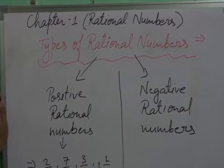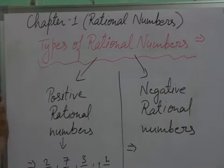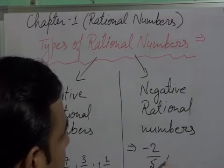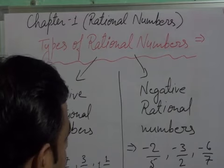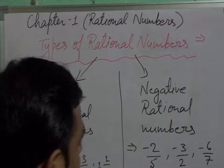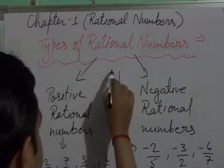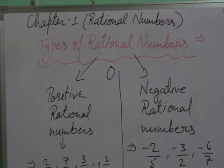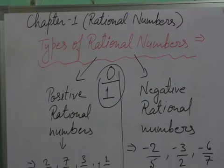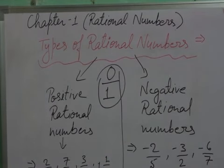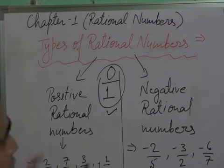Now for negative rational numbers — all the negative integers are included here, for example: minus 2 upon 5, minus 3 upon 2, minus 6 upon 7, minus 2 upon 7, minus 5 upon 9. These are examples of negative rational numbers. Zero is another integer that is neither negative nor positive, so 0 upon 1 is a rational number that is not included in positive and not included in negative.